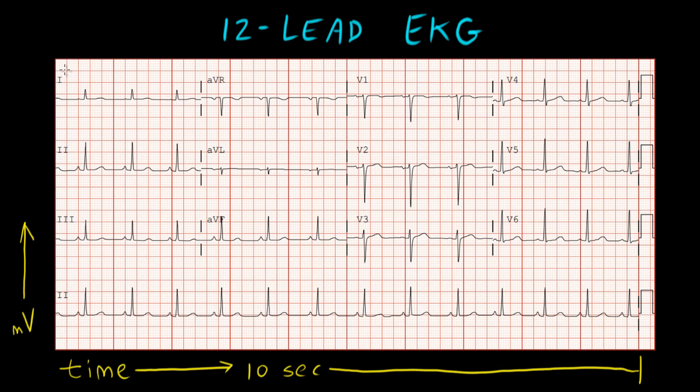Here on the left side, we have our frontal plane leads. The frontal plane leads are also known as the limb leads. They are derived from three electrodes that are placed on the body, and they let us look at the electrical activity of the heart in the frontal plane.